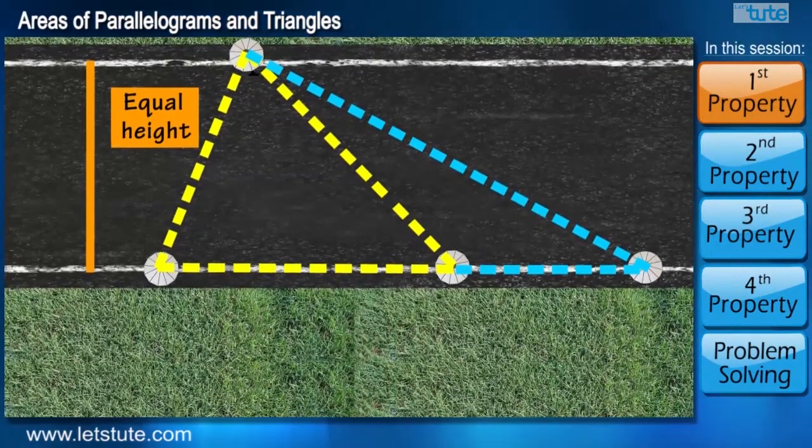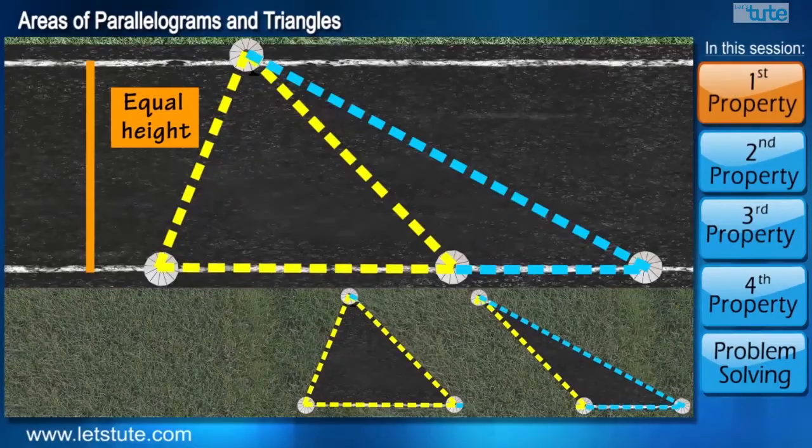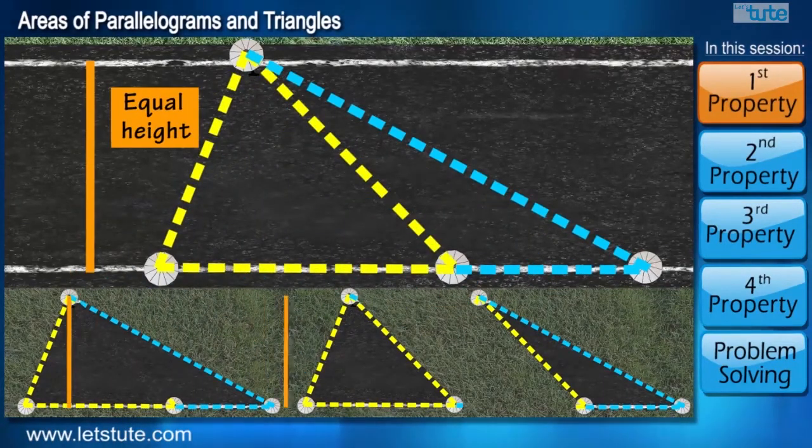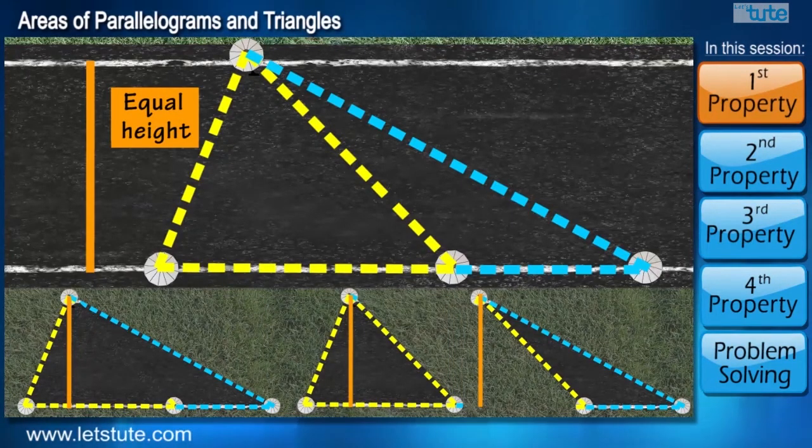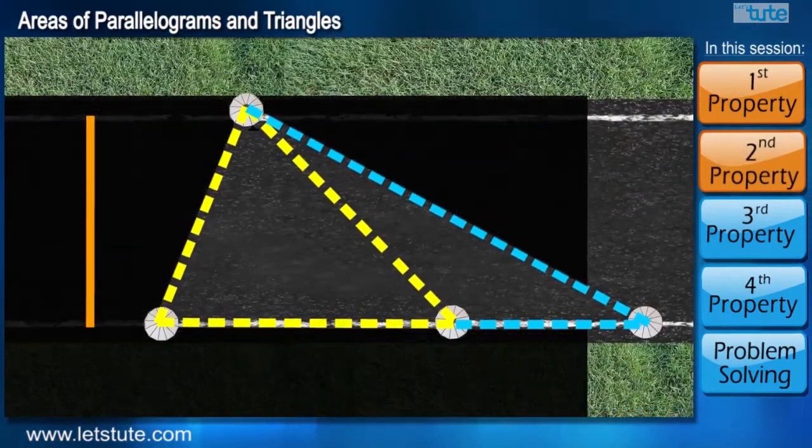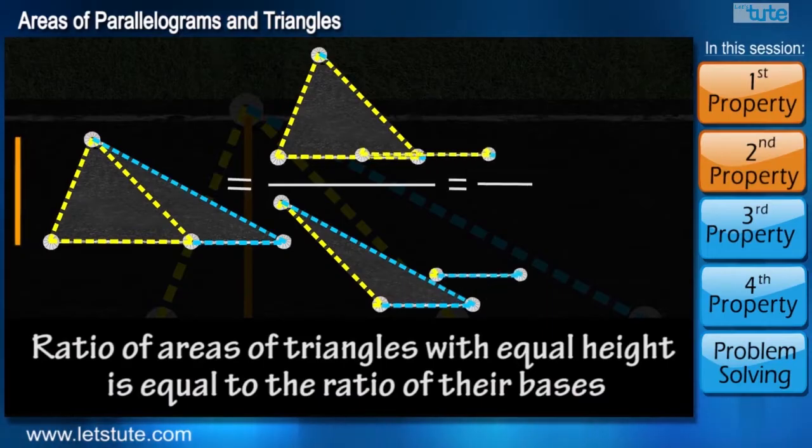So the conclusion is, if we draw two triangles by splitting one big triangle, the height of all three triangles is going to be the same. And when we find the areas of these triangles, their areas will not be equal. But the ratio of their areas will be equal to the ratio of their bases.